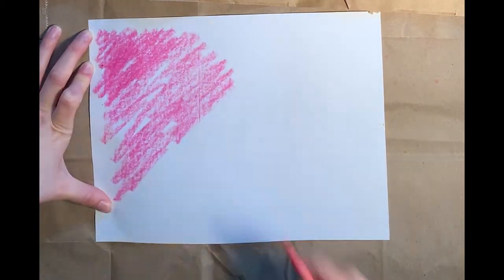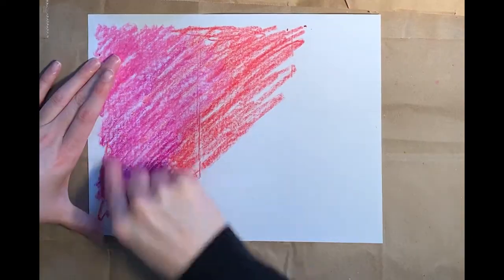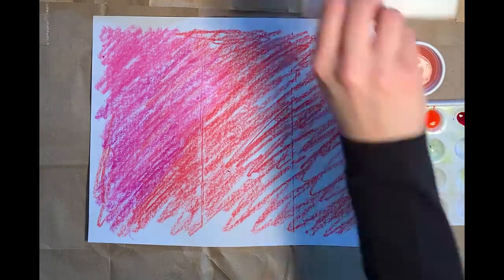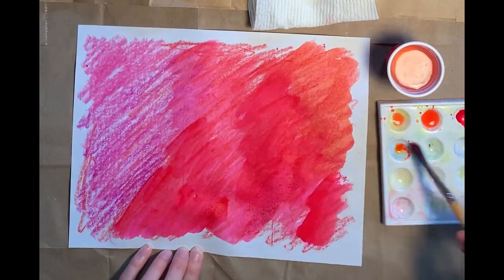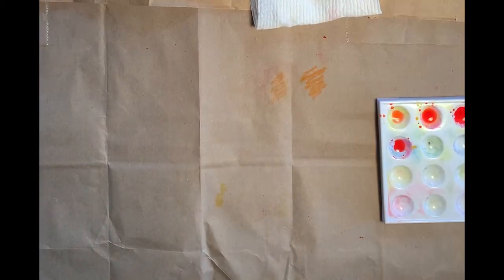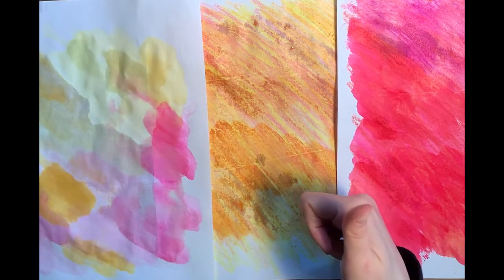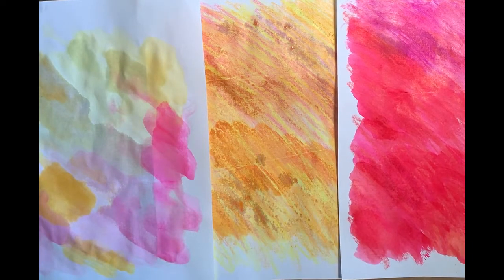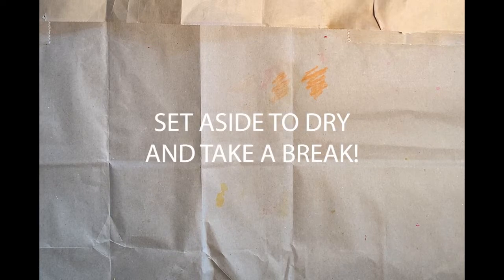So for my darkest sheet, I'm going to be using crayons and watercolor. I'm going to be using mostly pink and red because those are my darkest colors. And then I'm going to go over my crayon with my watercolor. The goal here is to make this sheet as dark as possible. Put it to the side to dry, clean up your mess. And now I have a light sheet, a medium sheet, and a dark sheet. So now's a good time to put the stuff to the side to dry and take a break. You've been working really hard.